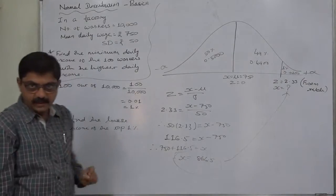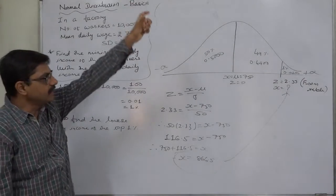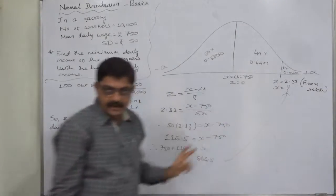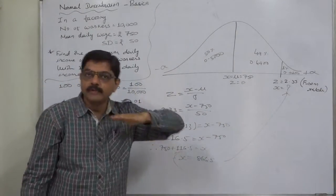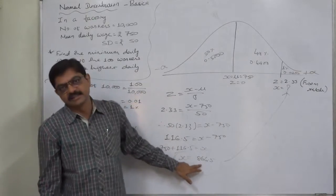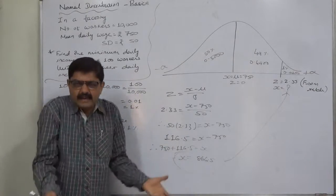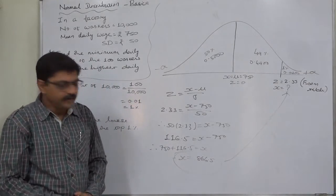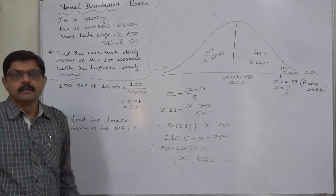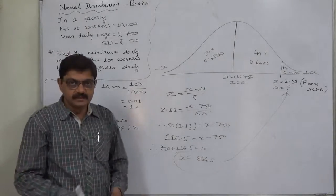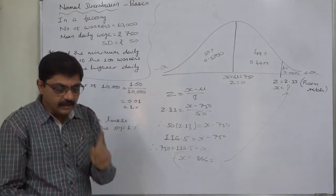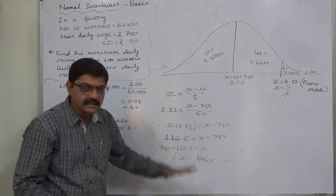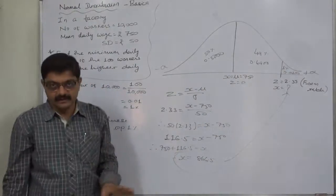The precise interpretation is: if we check the top 100 workers with the highest daily income, the income of the 100th worker is 866.5—or approximately 866 or 867 if we take it in integer value. This is the income of the last person in the list of the top 100 workers.